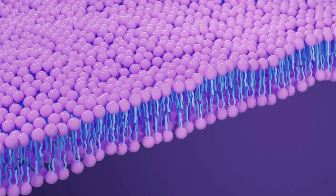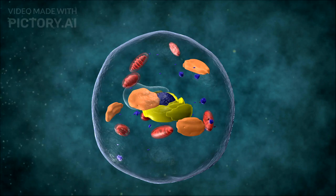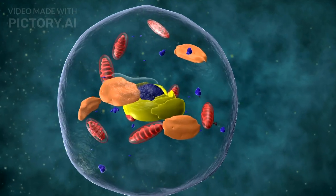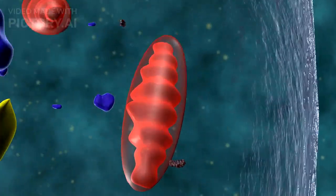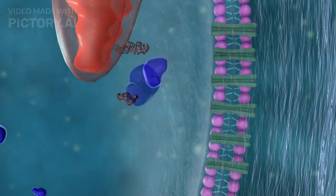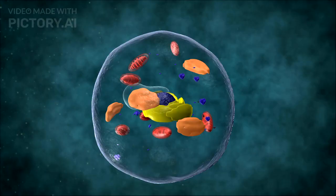We begin with the cell membrane, a dynamic boundary that protects the cell. This flexible layer is made up of a double layer of phospholipids, embedded with proteins that regulate what enters and exits the cell.